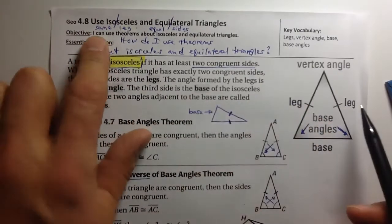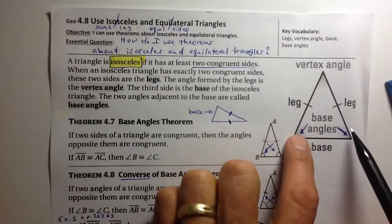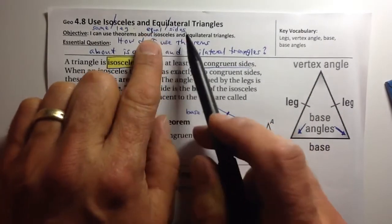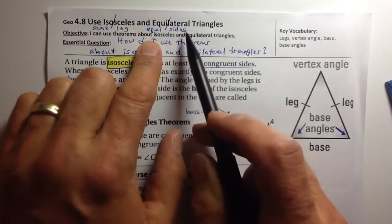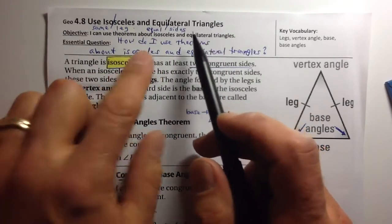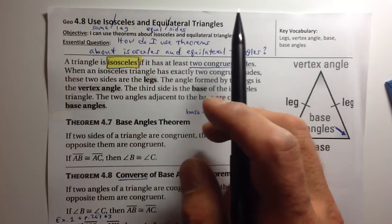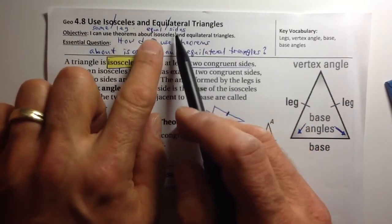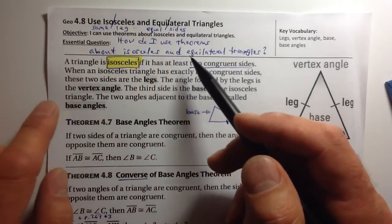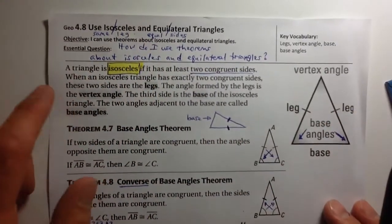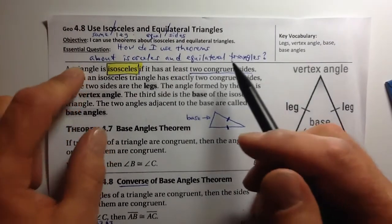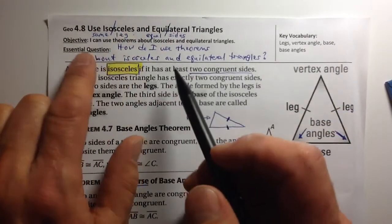An isosceles triangle has two legs that are the same. Equilateral — 'equal.' Lateral is like a lateral pass; your lats are the muscles on the side of your body. So equilateral means equal sides. This is a simple section — our last section of chapter 4, and then we are done with chapter 4.